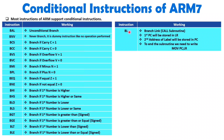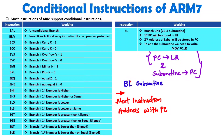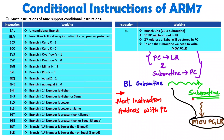When you execute BL, the program counter value gets stored inside LR — the link register. After that, the address written after BL gets loaded inside PC, and you jump to the location where the subroutine is. Once you end the subroutine program, at last you execute MOV PC, LR — to load the PC back to the original location. So when BL executes, it first loads the next instruction address into LR, then loads the subroutine address into PC, jumps to the subroutine, and on completion MOV PC, LR brings it back.